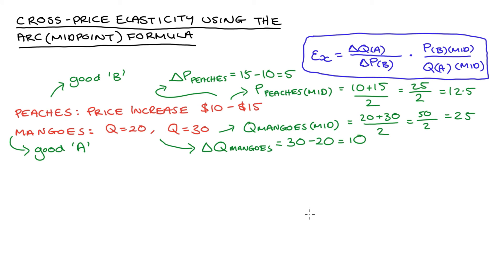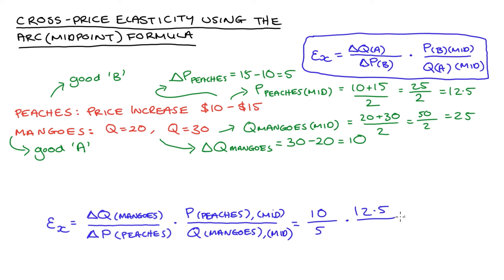So now we have all of our parts of our cross-price elasticity of demand, so we just substitute everything in. I'll do it down here, and I've replicated our formula just with the words peaches and mangoes instead of A and B. So we have the change in the quantity of mangoes, which is 10, divided by the change in the price of peaches, that's 5. We multiply this by the midpoint of the price change of peaches, so that's 12.5, and we divide that by the midpoint of the quantity change, our 25.